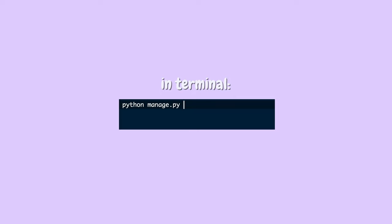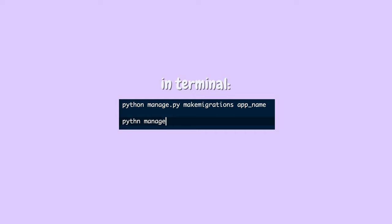Now that we've set up the database, we have to make some migrations. The first command is python manage.py makemigrations followed by your application name — this will make migrations for that one application. The second command is python manage.py migrate. You need to run both of these commands every single time you update the models.